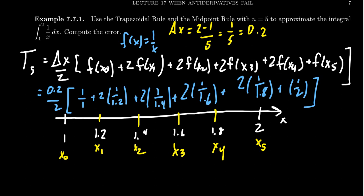So use a calculator to help you do 1 over 1.2 and 1 over 1.4 etc. Multiply these things out. Add them together. I'm just going to kind of summarize what this turns out to be. In the end this calculation will be approximately 0.695635. So this is the estimate given to us from the trapezoidal rule.